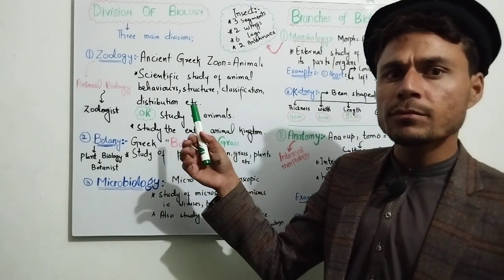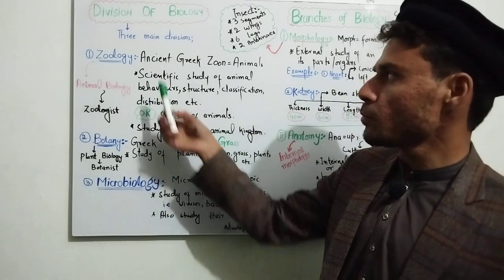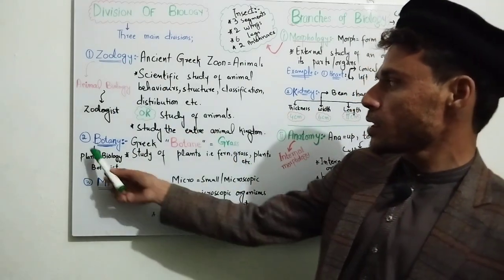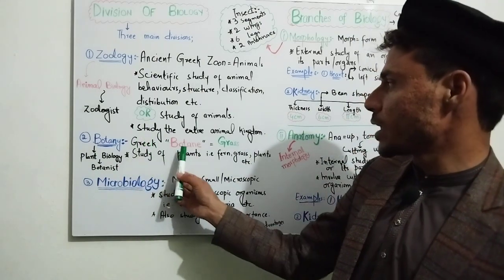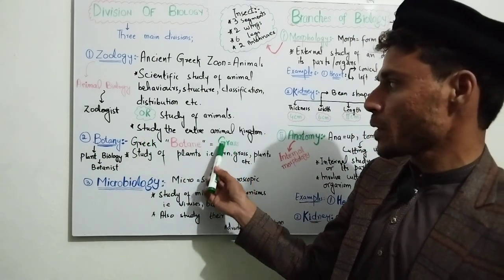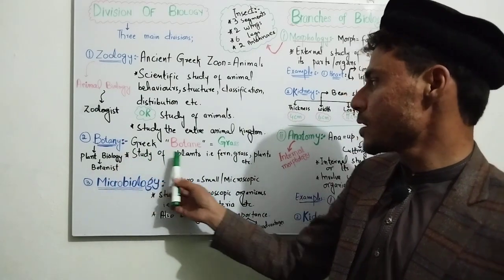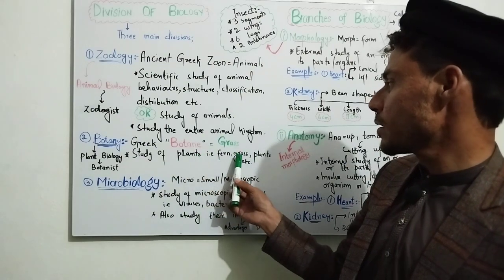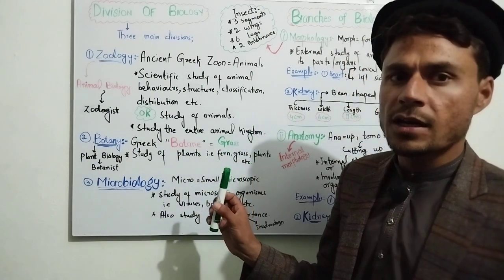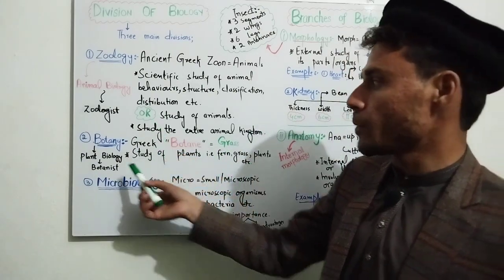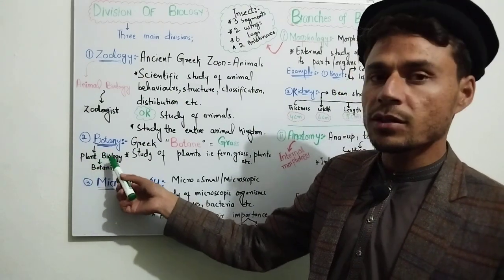The second division is botany. Botany comes from the Greek word for plant. The study of plants is called botany — including plants, trees, and other plant forms. Botany is essentially the study of all plants.